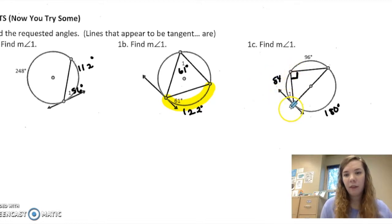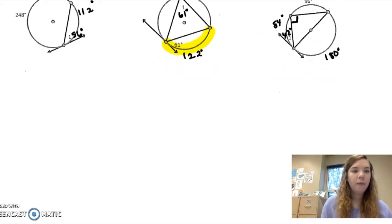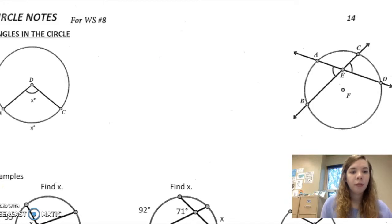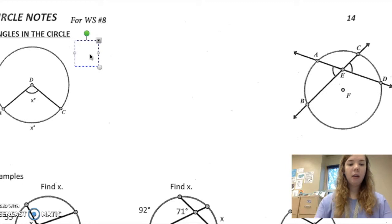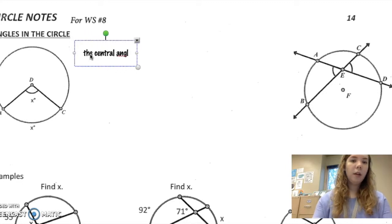180 minus 96, that means this piece has to be 84. And this would be half of that. So angle 1 would be 42. Okay, next page.